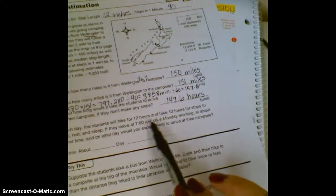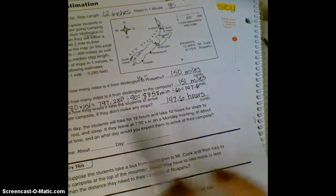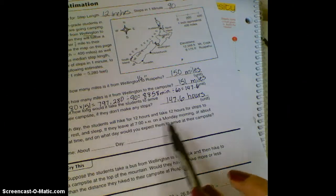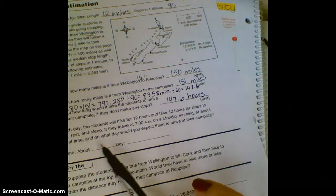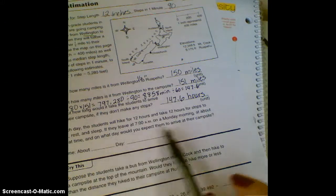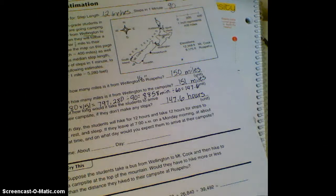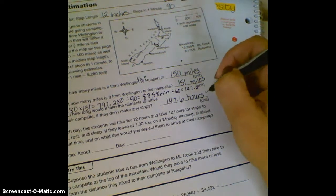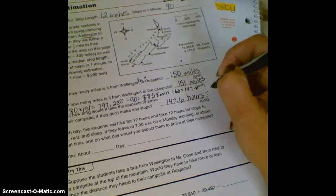Alright, and then it says each day the students will hike 12 hours and take 12 hours for stops to eat, rest, and sleep. If they leave at 7 a.m. on a Monday morning, about what time and what day would you expect them to arrive at their campsite? Well first off we need to figure out how many days this is going to take if they walked that many. So let's divide it by 24.